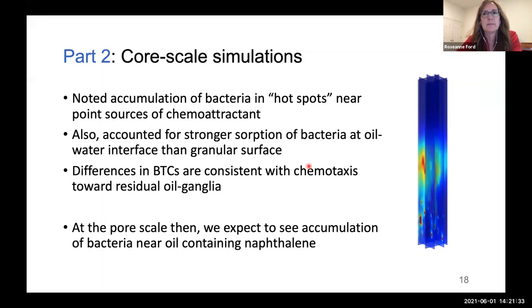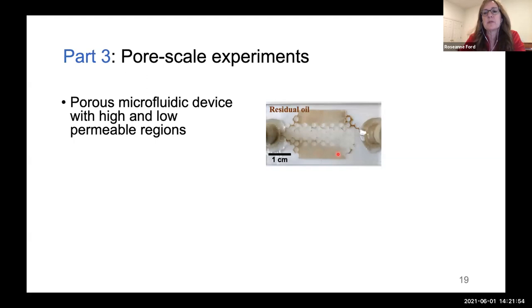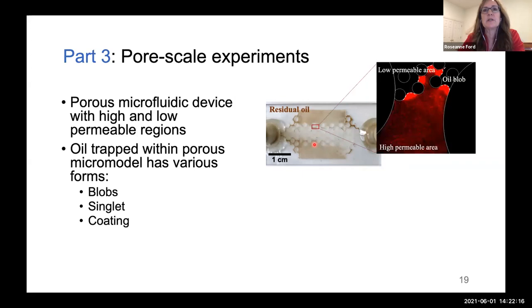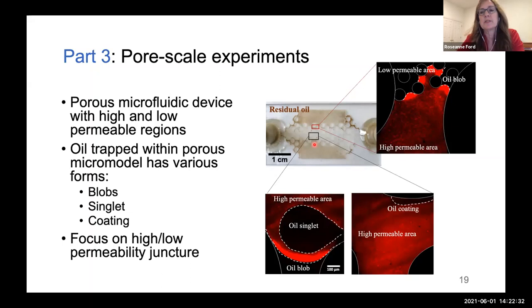In the pore-scale experiments, a micromodel with regions of high and low permeability was initially filled with oil, then flushed with water, which forced out most of the oil except some residual in regions of low permeability and near the junctions. The oil trapped within the interstices of the micromodel took different structural forms: blobs, singlets, and coatings. The oil is black, the bacterial suspension is red, and the white dashed lines represent the interface between the oil and the bacterial suspension. We focus primarily on the regions between the low-permeability and high-permeability zones where we retain these oil ganglia.